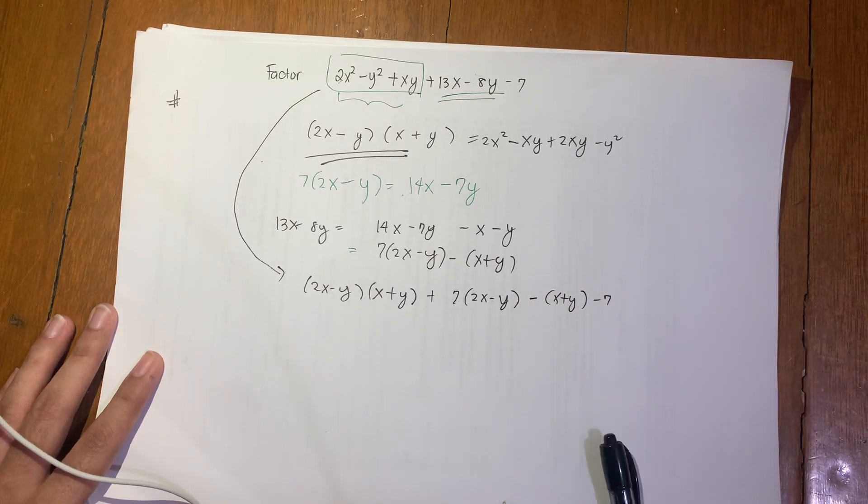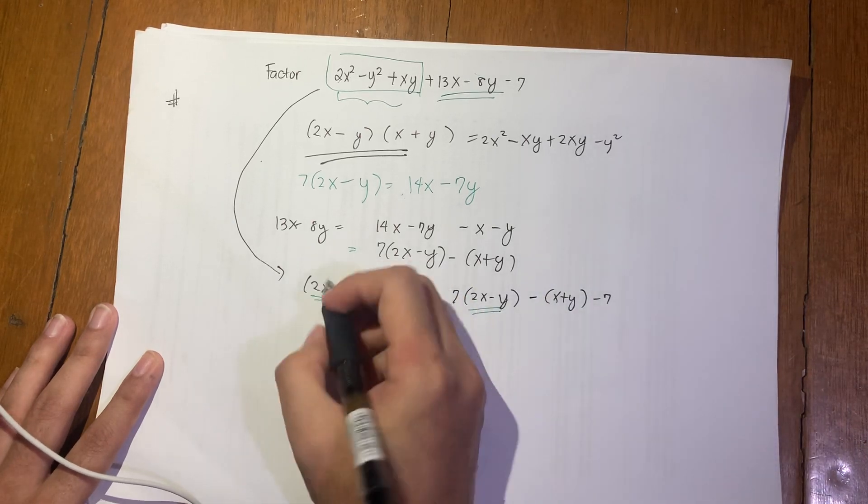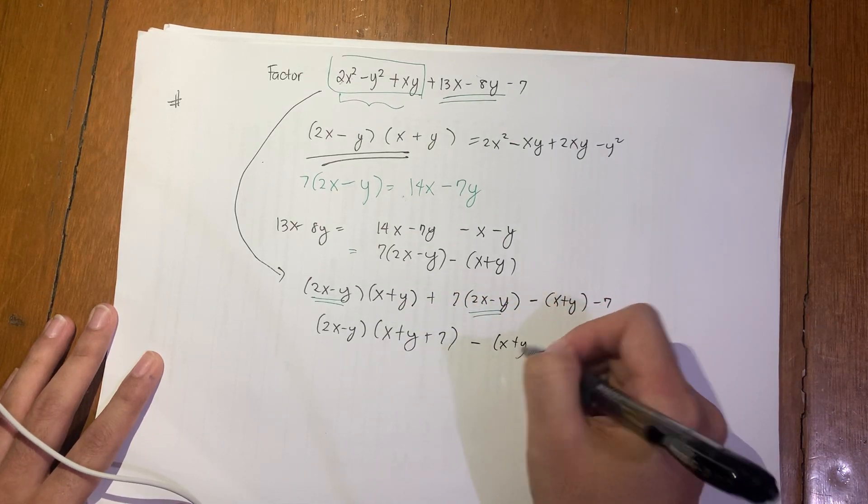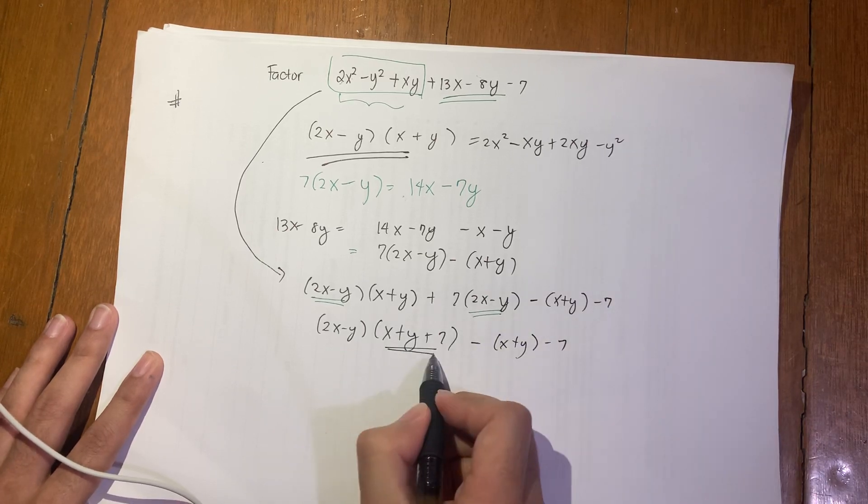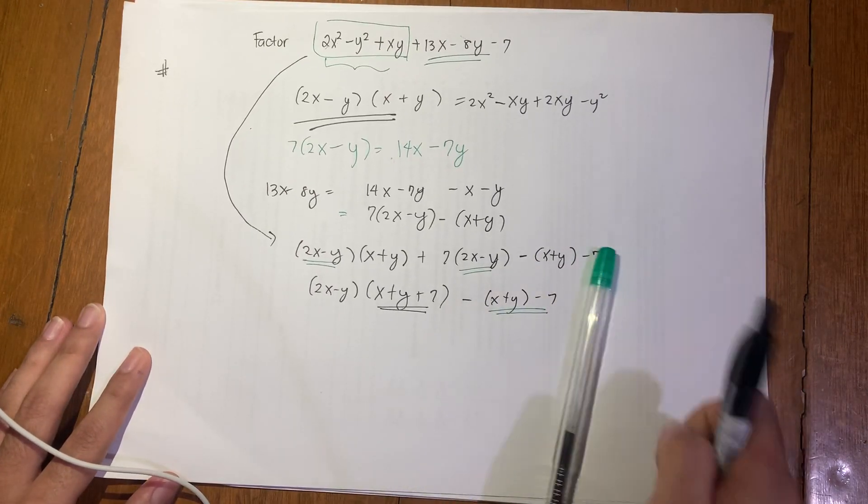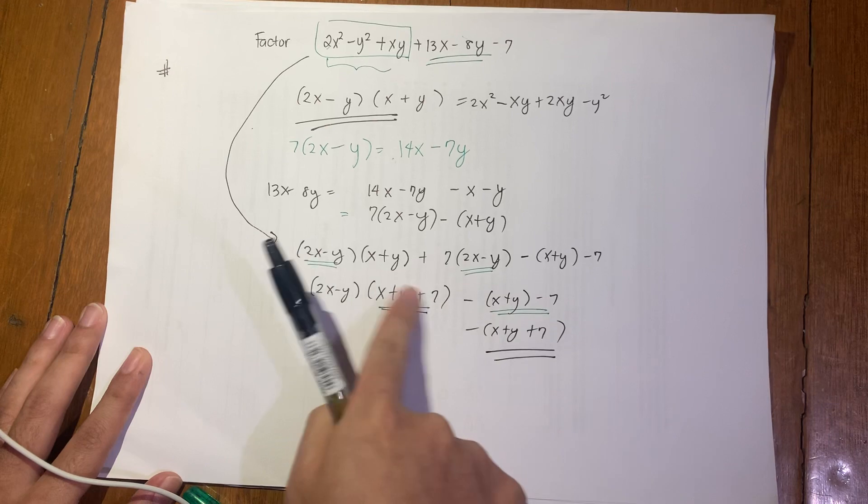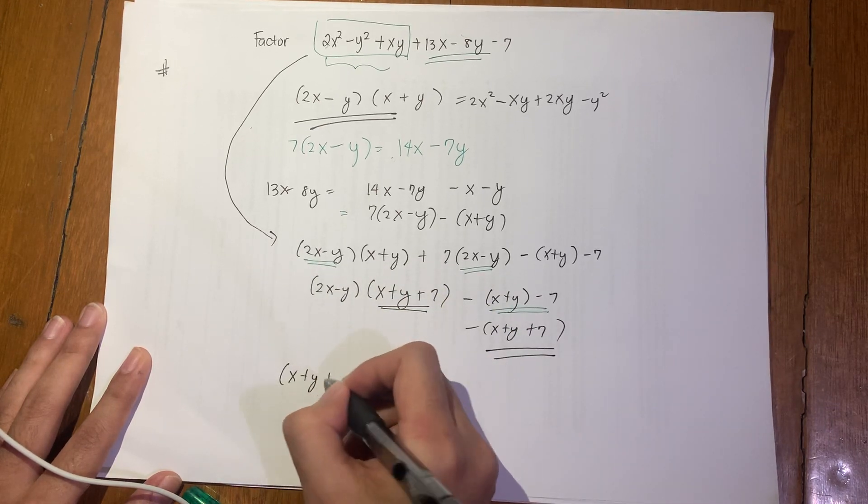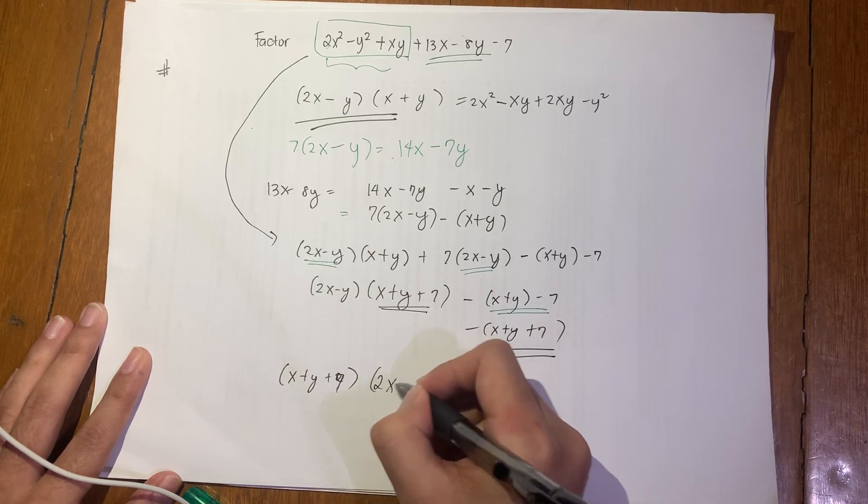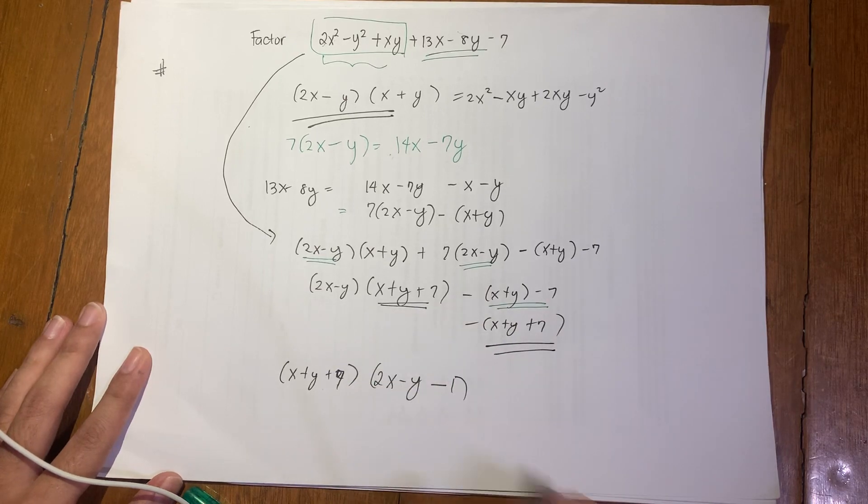So now the big term here is reduced to (2x - y)(x + y) plus 7(2x - y) minus (x + y) minus 7. Next we factor out by grouping again because 2x - y is common. I'll factor it out: (2x - y)(x + y + 7) - (x + y + 7). If I factor out the negative 1 from here, I get (x + y + 7)(2x - y - 1). So this is the answer.